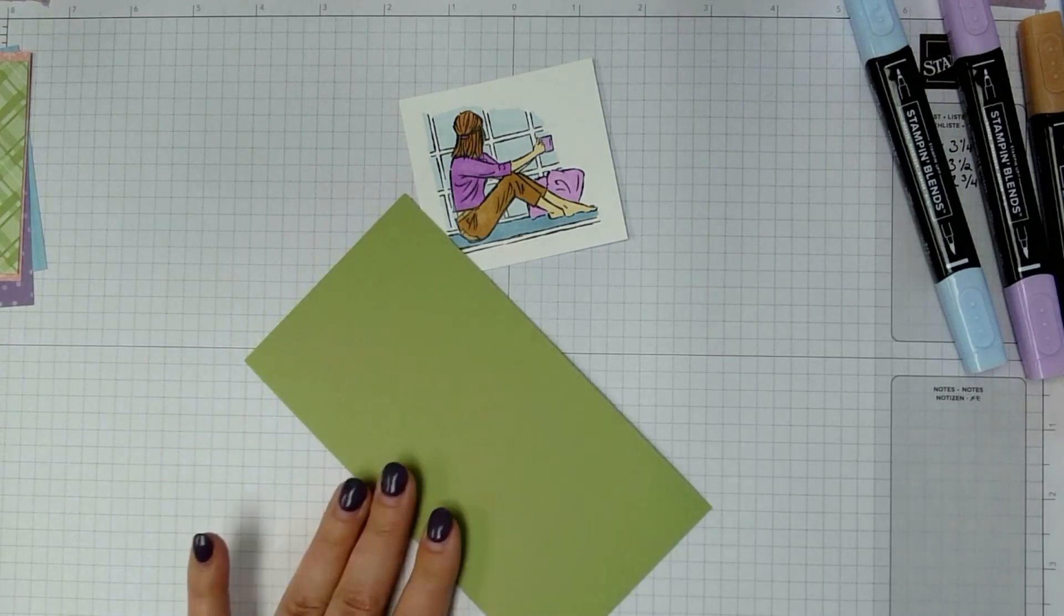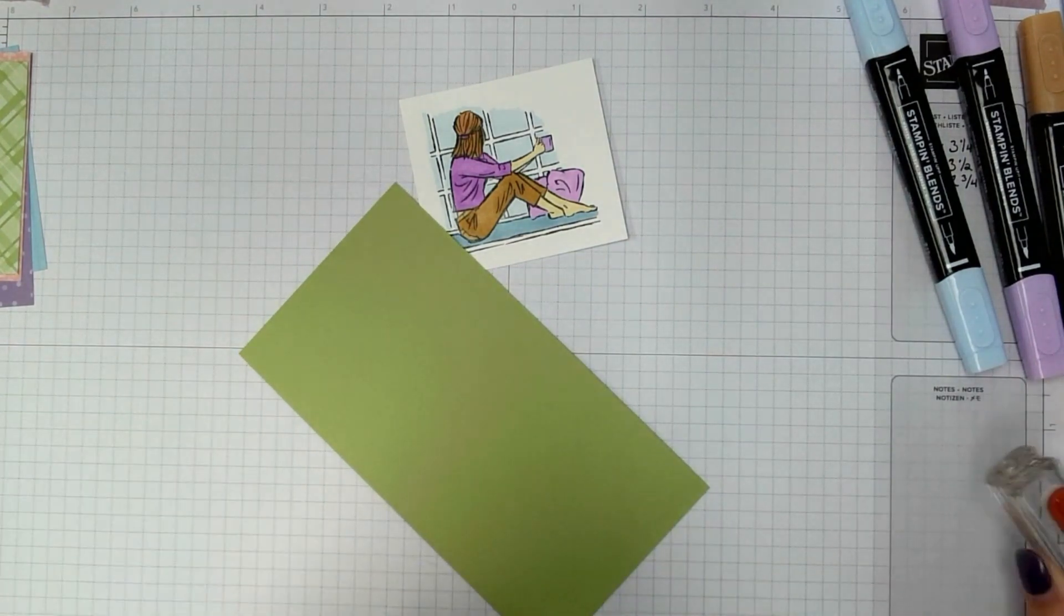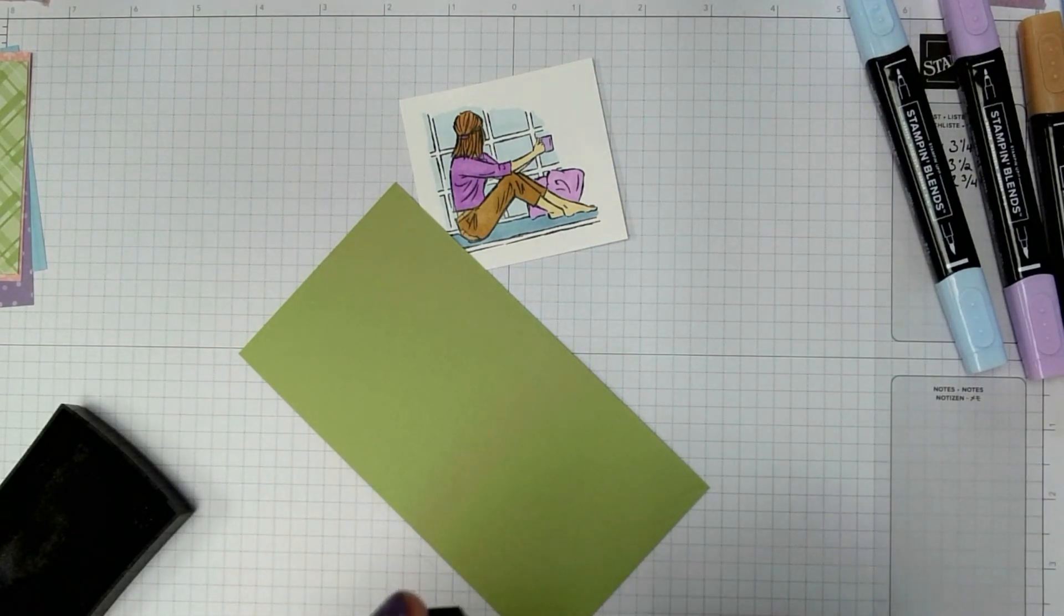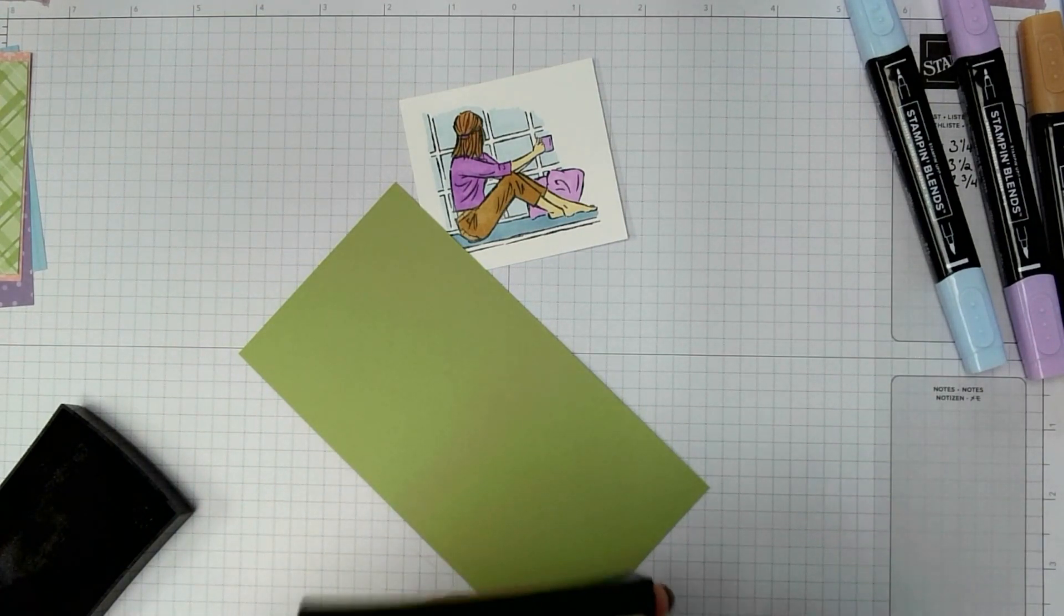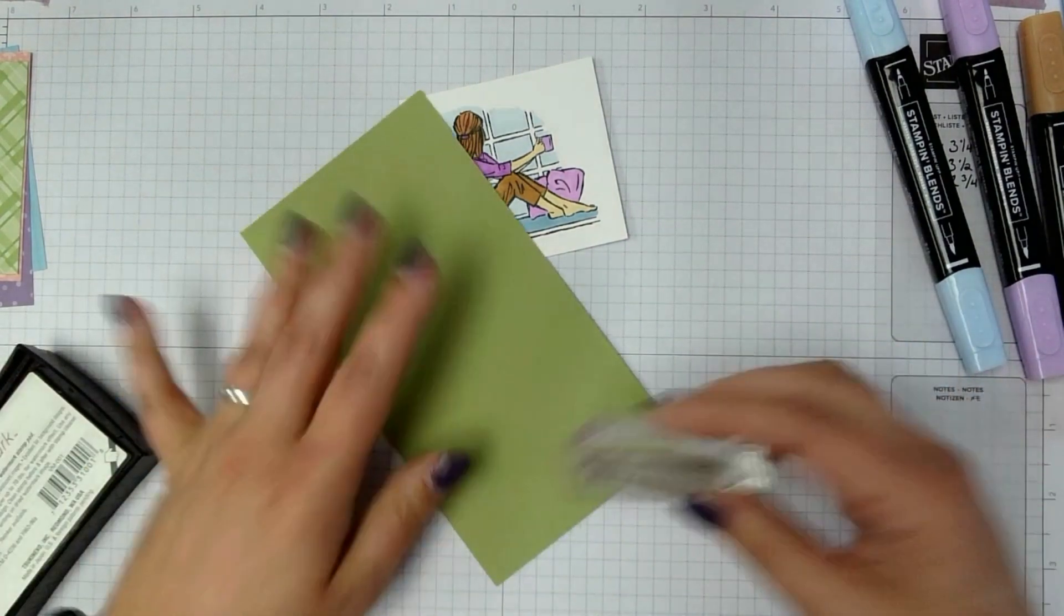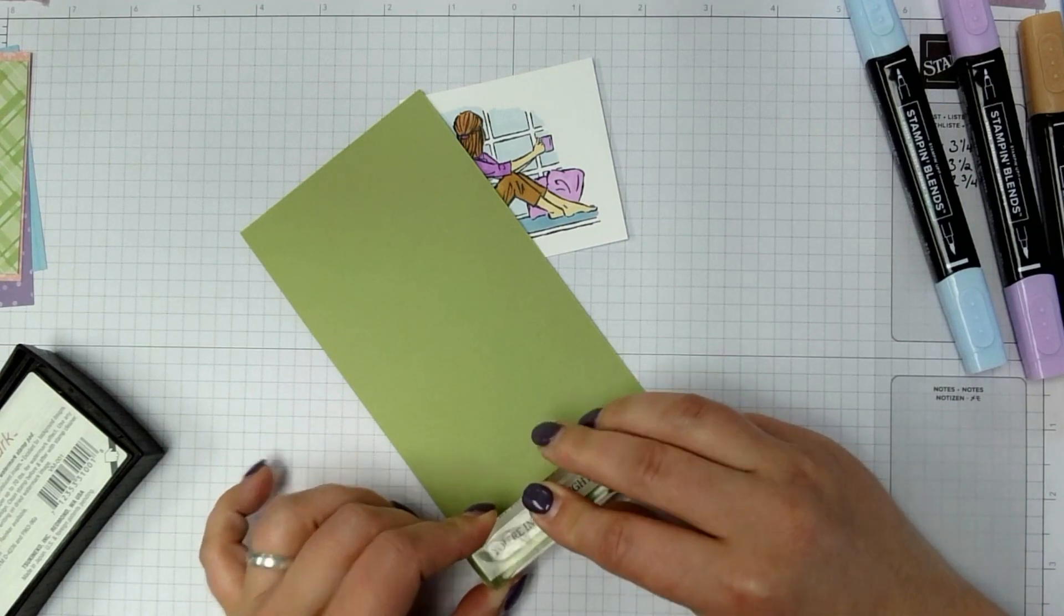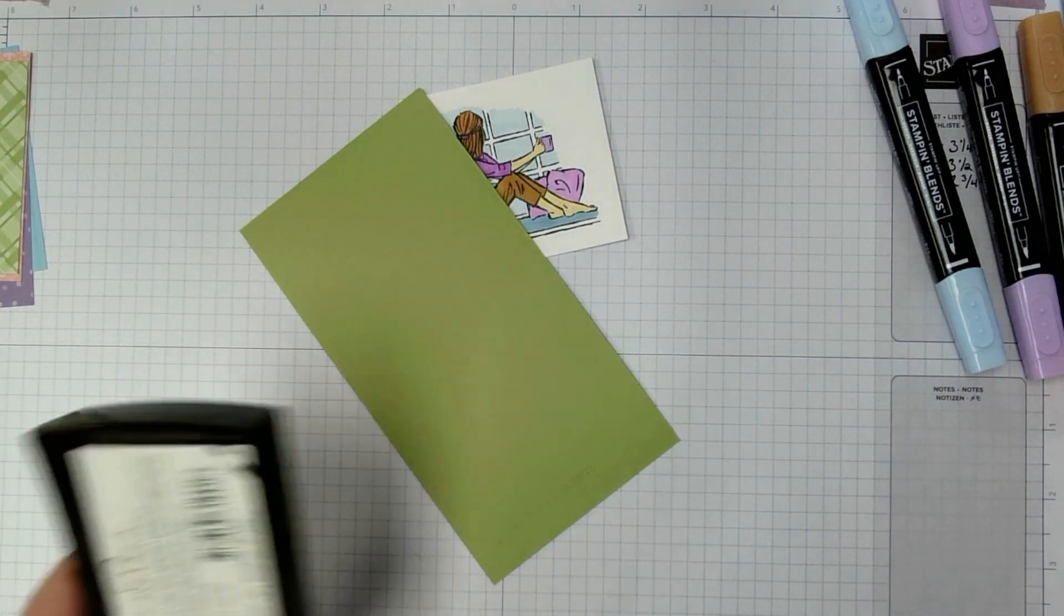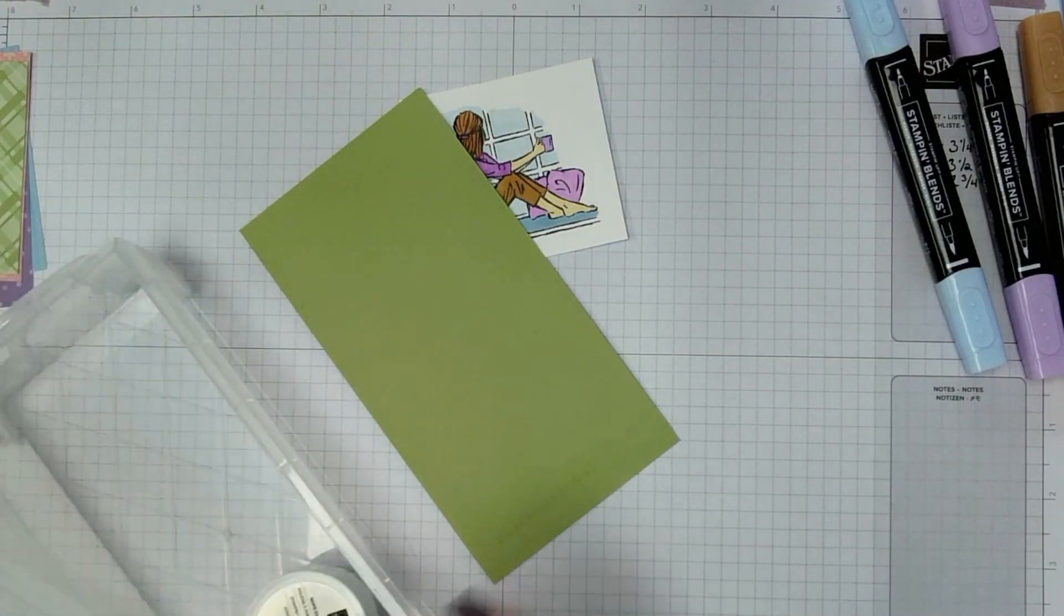Okay, so I have a scrap of Pear Pizazz. This is the smallest scrap I have of this color right now. I know it's way too big for what we're using it for, but that's okay. I'll save the rest of it when we're finished. So I have my VersaMark ink, and You're In My Thoughts stamp. So I'm just going to stamp this straight down and be careful not to wiggle it or move it around too much. And then I'm going to heat emboss it using the white embossing powder.